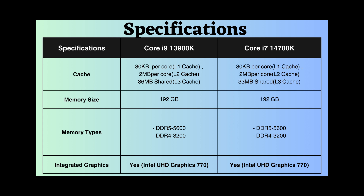A larger cache size aids in faster data access and reduced latency. Both processors support a maximum memory of 192 gigabytes. Additionally, they support DDR5 and DDR4 memory, with DDR5 supporting speeds of 5600 MHz and DDR4 supporting speeds of 3200 MHz.